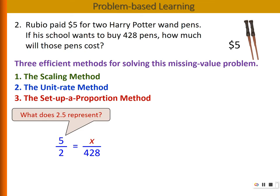For example, 5 over 2 equals 2.5. What does 2.5 represent in the context of this problem? 2.5 is actually the unit rate. It's the cost per pen.